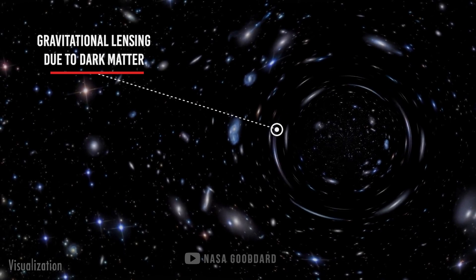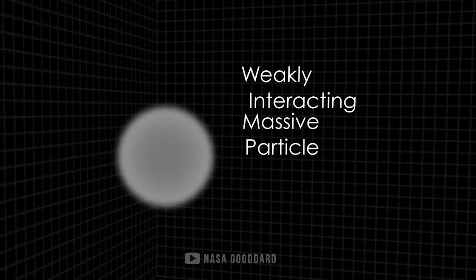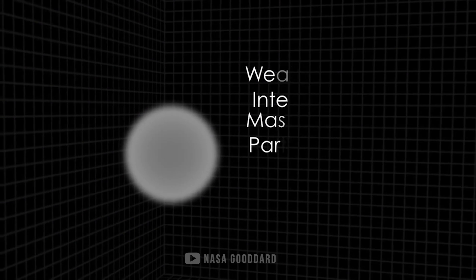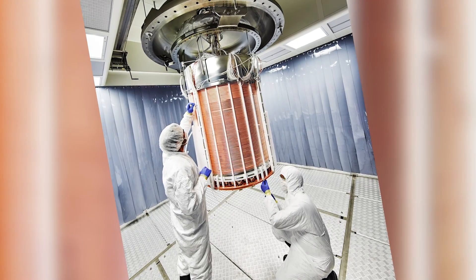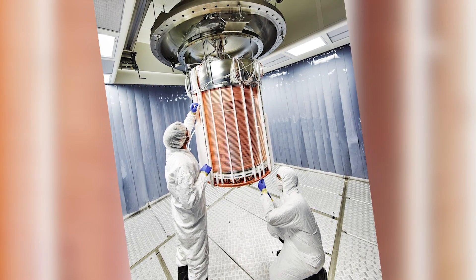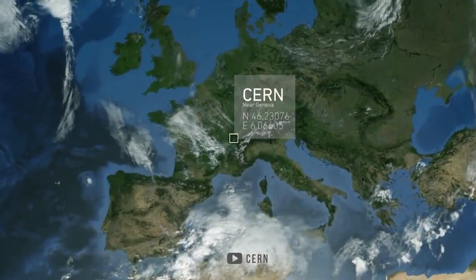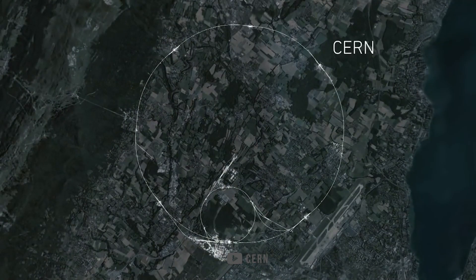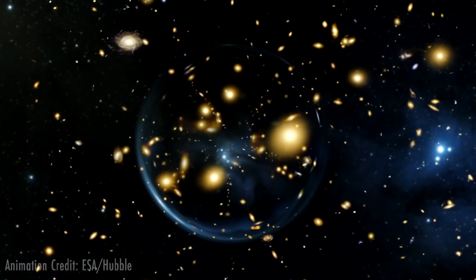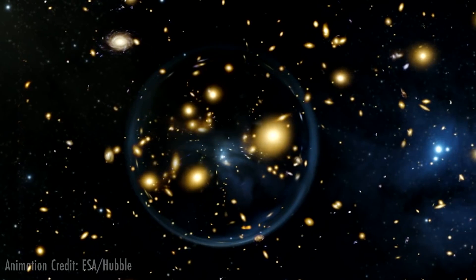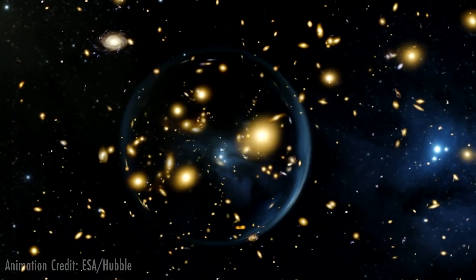One candidate for what it could be is a weakly interacting massive particle, or WIMP, which is heavy and is electromagnetically neutral. Scientists have tried detecting it in liquid xenon baths via sensors on silicon chips and the Large Hadron Collider in Geneva. They've even studied heavy stars to see how they might be affected when moving through this halo of dark matter. But so far, to no avail — it has remained elusive.